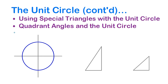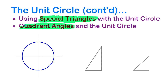We're going to look at the unit circle and how we can find coordinates of points on it. First, we're going to look at how you can use special triangles — triangles related to common angles — to find coordinates of points. Then we're also going to look at how we can find coordinates of points for quadrant angles.